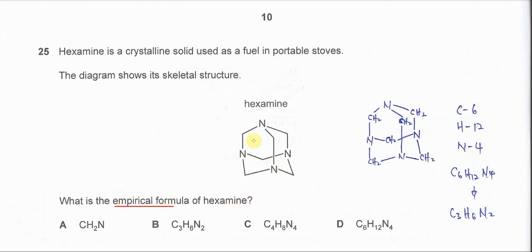For this skeleton structure, first you need to know that all the intersections represent CH2 groups — CH2, CH2, CH2, CH2, CH2, CH2, CH2, CH2 — which gives us something like this.